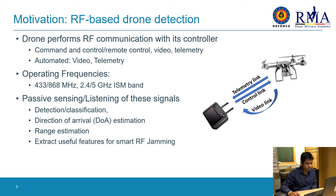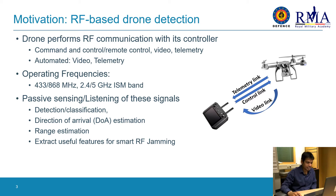As you all know, a drone performs radio communication with its ground control station or controller, mainly through three communication links: telemetry, command and control, and the video link. For automated drones flying on waypoints, you still generally have the video and telemetry link. They generally perform communication using frequency bands 433, 868 megahertz, or 2.4 and 5 gigahertz ISM band.